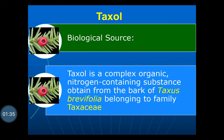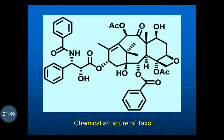Biological source: Taxol is a complex organic nitrogen-containing substance obtained from the bark of Taxus brevifolia, belonging to family Taxaceae. This is the chemical structure of Taxol. Principally, taxol is used as an anti-cancer drug.